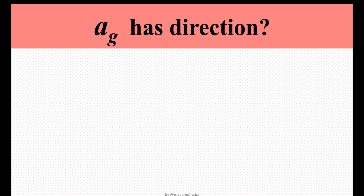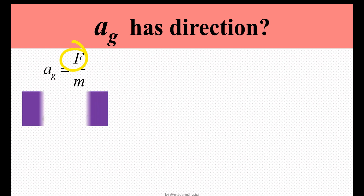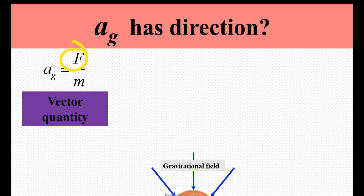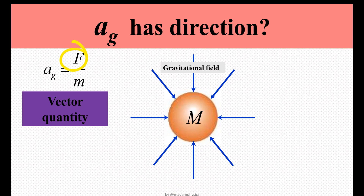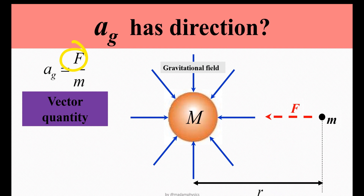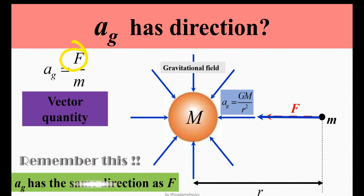Next, let's determine whether Ag has direction or not. Since Ag is force over test mass, and F is a vector quantity, Ag is also a vector quantity — meaning it has both magnitude and direction. As shown in the diagram of a point mass with arrows around it, the arrows indicate the direction of gravitational field strength pointing towards the centre of the point mass. The direction of Ag is always towards the centre of point mass M, and Ag and F acting on the test mass will always have the same direction, regardless of the position of the test mass.